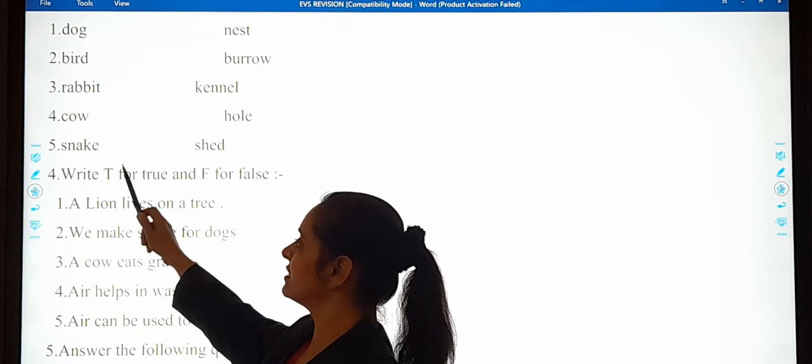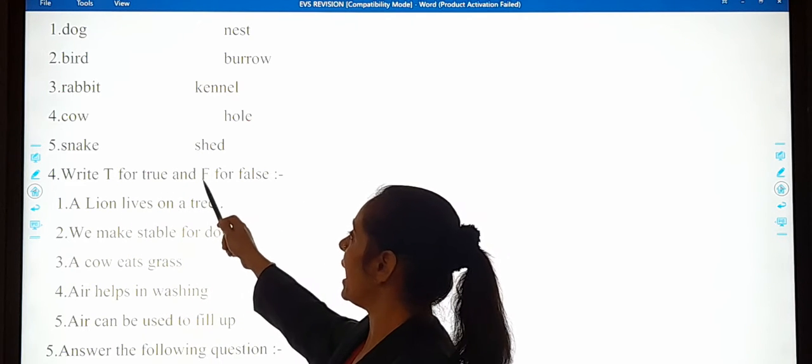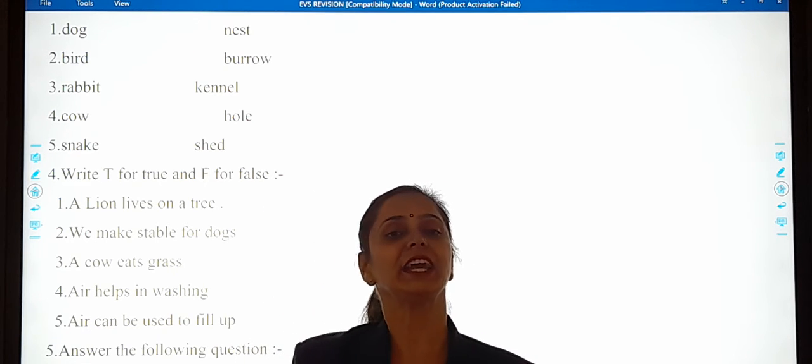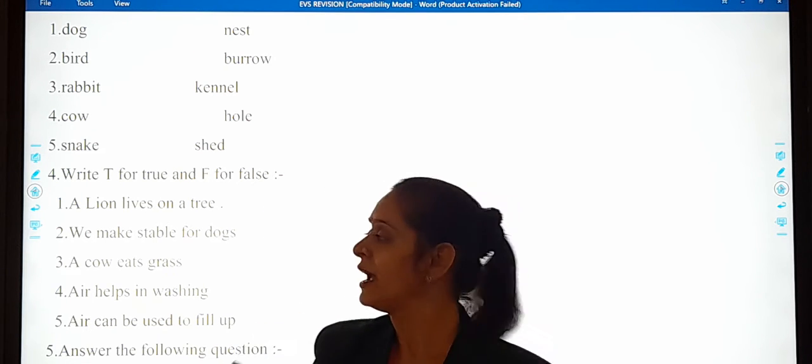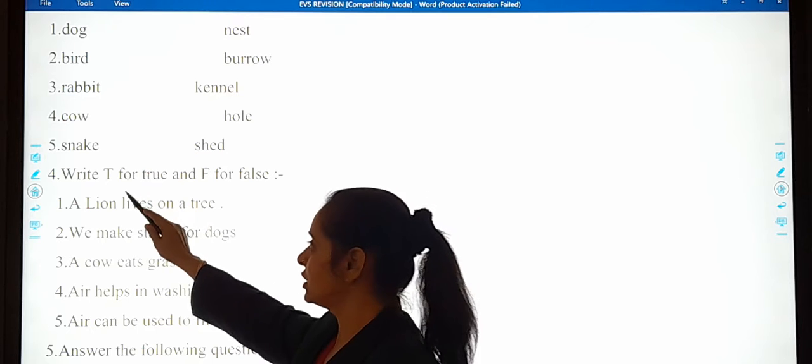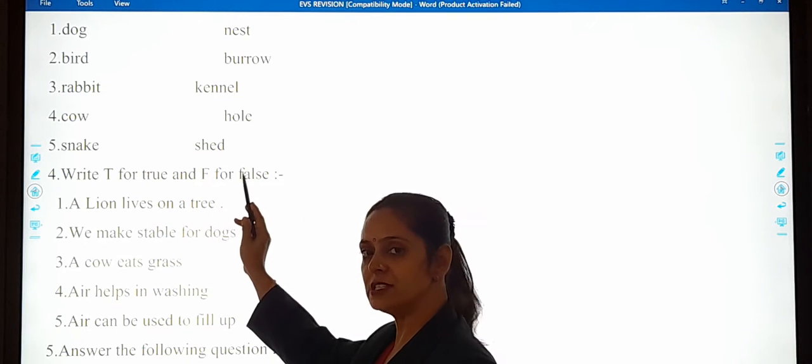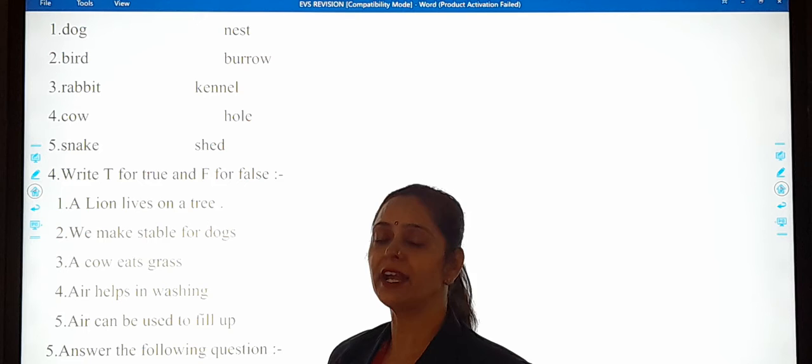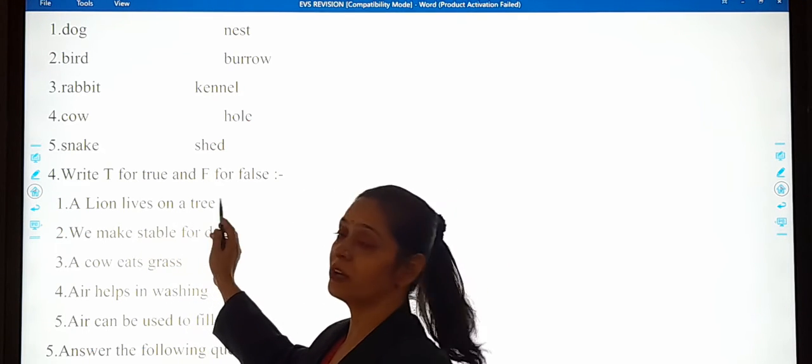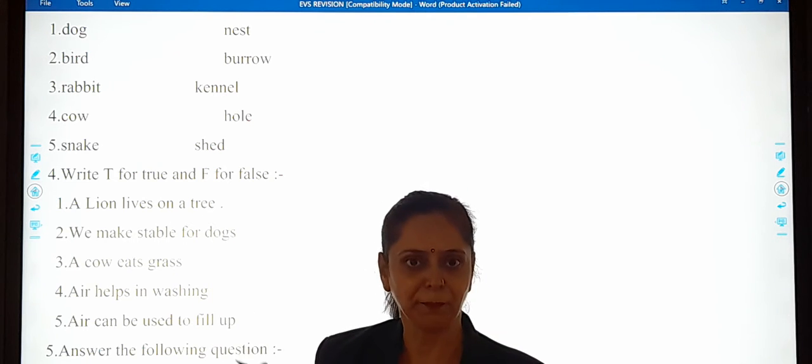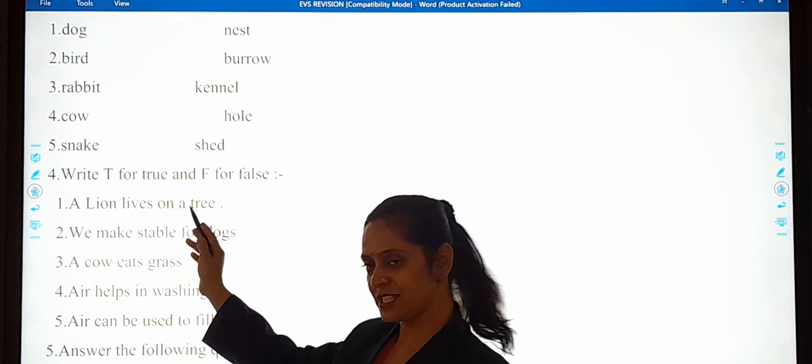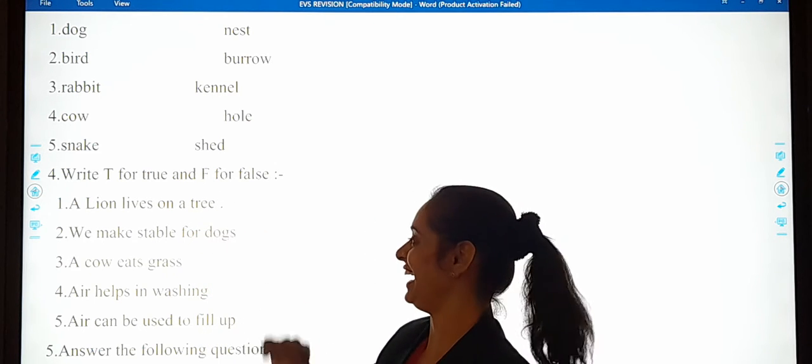Now the fourth one is, write T for true and F for false statement. Jho sahih hai, ispe aap likhenghe T, true. And jho galat hai, uspe aap likhenghe F for false. So you will be writing either true or false. A lion lives on a tree. Lion tree pe rehta hai. Kahan pe rehta hai? Lion lives in a den. So it's a true or false? False. Very nice.